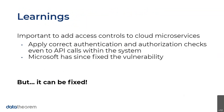What this really tells us is that it's important to add access controls to any cloud microservice functions or tools, and to apply correct authentication and authorization checks even to API calls within the system. It's also really important to employ a continuous, automated, full stack security program, because this will constantly scan things. Hackers might write a script running right now trying all kinds of permutations hoping for a 200 OK response. This can actually be fixed — let's talk about how a full stack program can help.